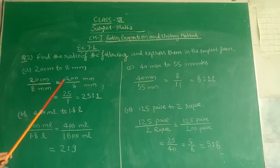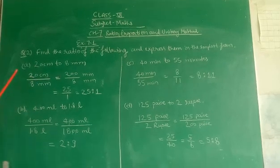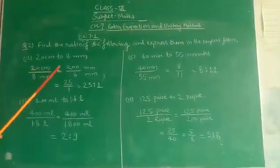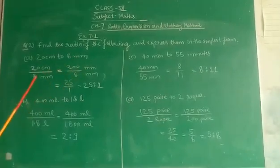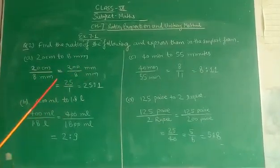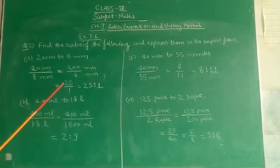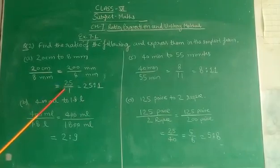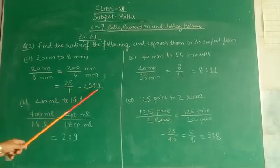is written as 20 cm converted into mm, that is 200 mm and 8 mm. That is written as, divide by 8, 25 upon 1, that is 25 ratio 1.